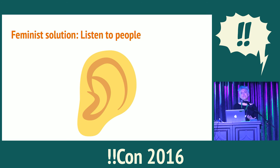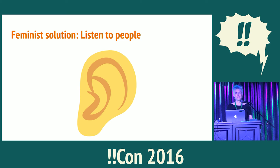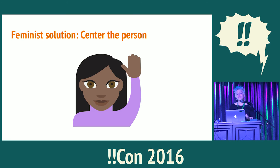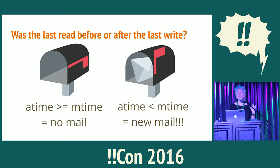The next thing I did is I actually listened to people. One of my friends' laptops was going slowly. I gave her the standard advice — turn off A-Time — and when she told me her mail reader didn't work, I didn't sneer at her and tell her to reconfigure it. I thought, that seems like a reasonable thing to want to do in your application. The next thing I did is I centered the person. I asked, what is it that my friend is actually trying to find out with her mail reader? What she really wanted to know was not the exact second the file had last been read — she wanted to know: was the last read before or after the last write? What was the A-Time relative to the M-Time?